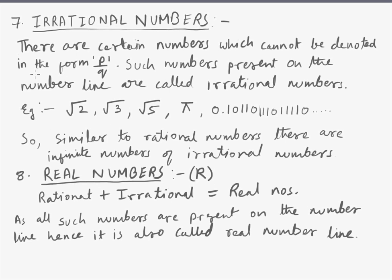Moving on, we come to irrational numbers. There are certain numbers which cannot be denoted in the form P by Q. Such numbers present on the number line are called irrational numbers. Examples: root 2, root 3, root 5, pi, 0.10110110110110410... which goes on continuously. So similar to rational numbers, there are infinite numbers of irrational numbers.